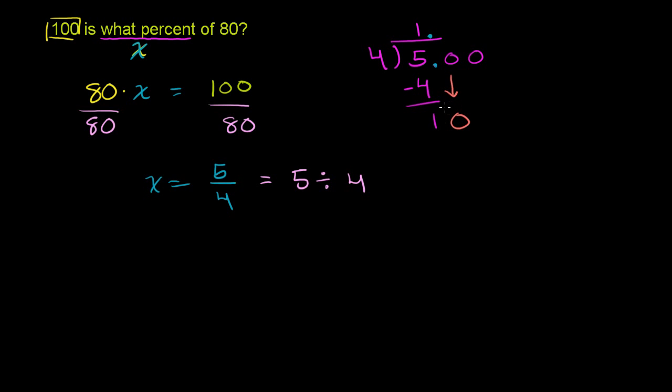4 goes into 10 two times. 2 times 4 is 8. You subtract. 10 minus 8 is 2. Bring down the next 0. 4 goes into 20 five times. 5 times 4 is 20. Subtract. No remainder. So this is exactly equal to 1.25. 5 over 4 is the same thing as 5 divided by 4, which is equal to 1.25.